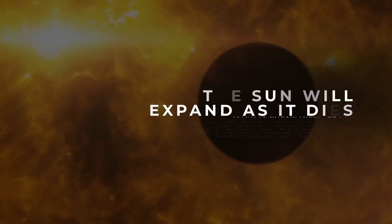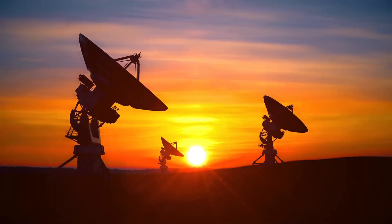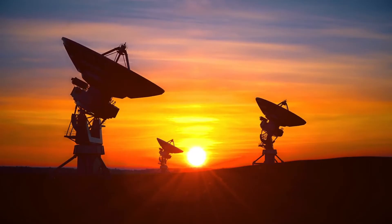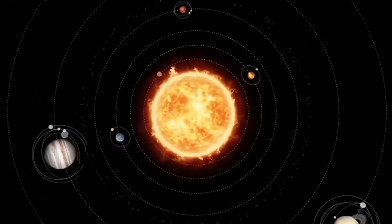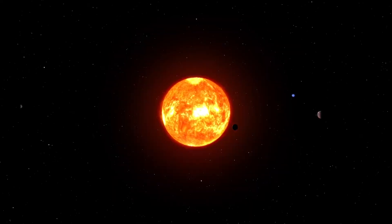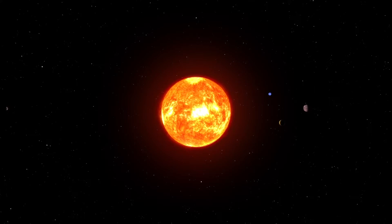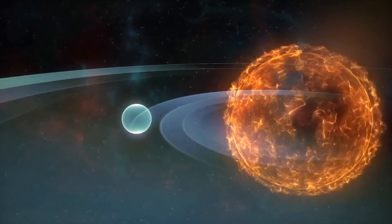The Sun will expand as it dies. One of the more dire discoveries for Earth that astronomers have made has to do with our own Sun. Our Sun is currently classified as a yellow dwarf star. It does not have enough mass to go supernova at the end of its life. But that doesn't mean it will just go out.